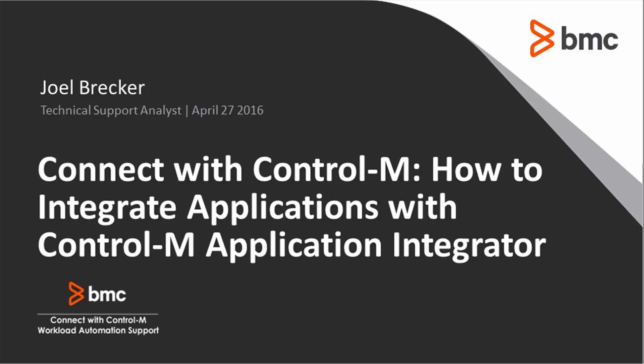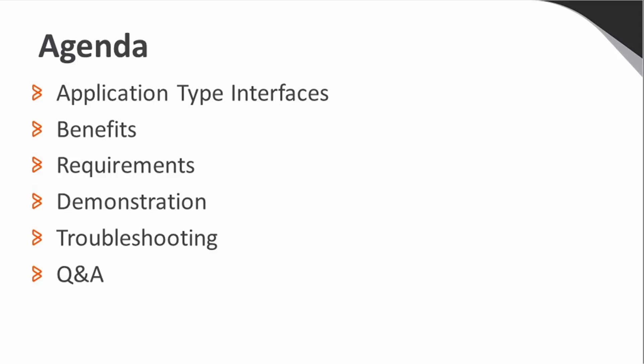Do you have applications in your environment that would benefit from automation? Today we're going to show you how to integrate various application types using Application Integrator. Today we're going to discuss the different application type interfaces, look at some of the benefits of using Application Integrator, check out the requirements, and do a demonstration. In the demonstration, we're going to create a command line utility job type using the DBU hot backup. We'll also discuss some troubleshooting tips and tricks, and then follow that up with a Q&A.